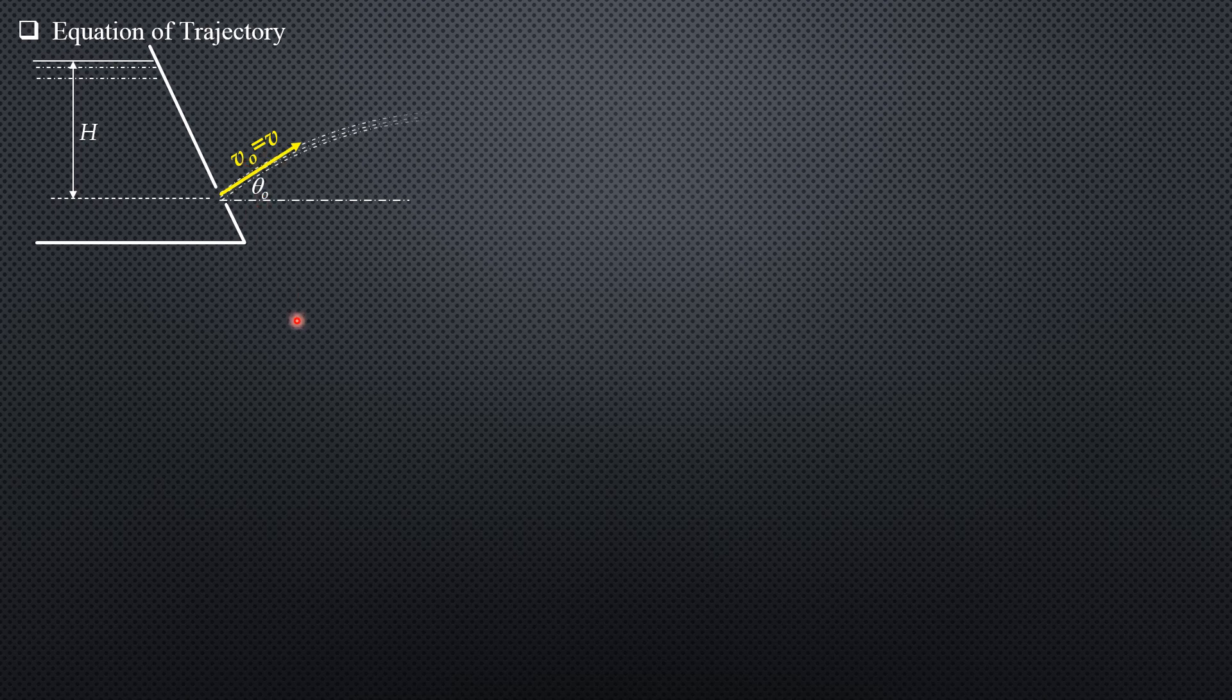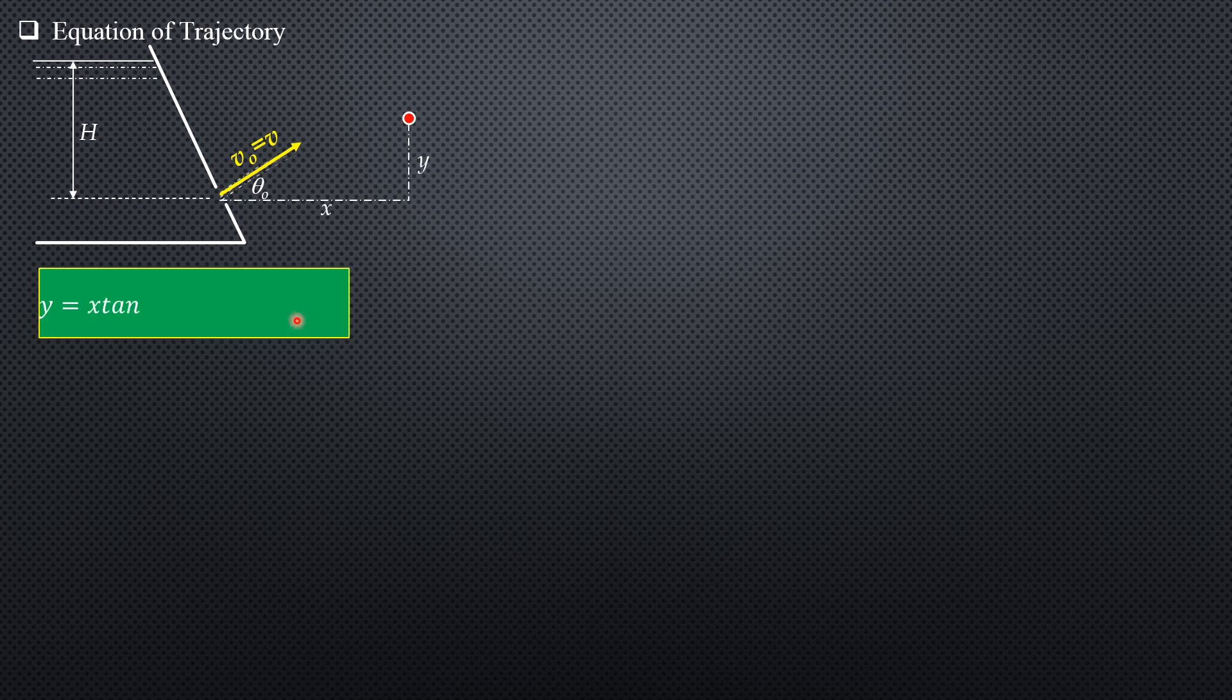...the initial velocity is also the actual velocity because that's the velocity of the jet. Then from dynamics, y equals x tan(theta_o) minus gx²/(2v_o² cos²(theta_o)).